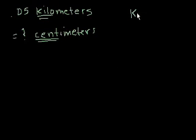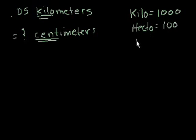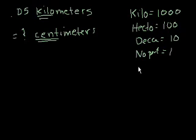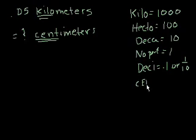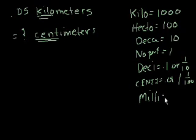So kilo means 1,000. Hecto means 100. Deca means 10. You might recognize that from decade, 10 years. And then, of course, you have no prefix, means 1. No prefix equals 1. Deci is equal to 0.1, or 1 tenth. Centi is equal to 0.01, or 1 over 100. And then milli is equal to 0.001. And that's the same thing as 1 over 1,000.